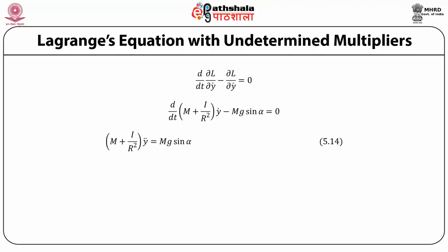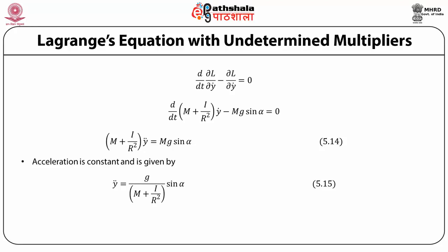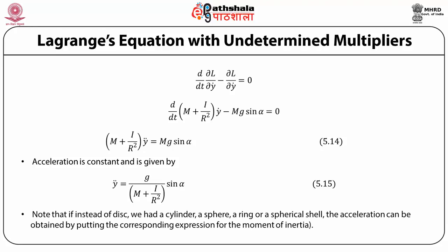From this we calculate the Lagrangian equation of motion: d/dt(∂L/∂ẏ) − ∂L/∂y = 0. The equation of motion becomes d/dt[(m + I/r²)ẏ] − mg sinα = 0, which gives ÿ = g sinα / (m + I/r²). The acceleration is constant since g, the inclination, mass, and moment of inertia are all constant. Also, if instead of a disk we had a cylinder, sphere, ring, or spherical shell, the acceleration can be obtained by simply substituting the corresponding expression for the moment of inertia.